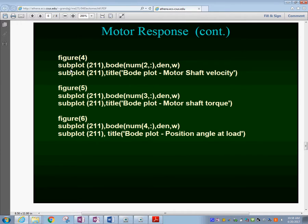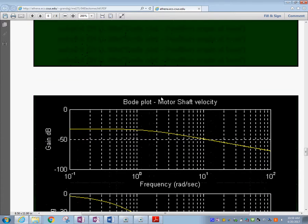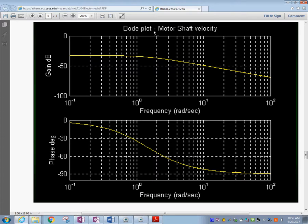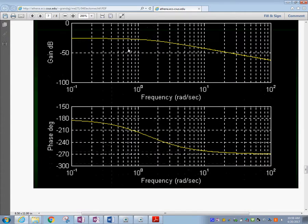CAMP-G will generate those statements automatically in the file. Here I just tried some different figures to illustrate other Bode plots like motor shaft velocity, motor shaft torque, and Bode plot of the position angle and load.